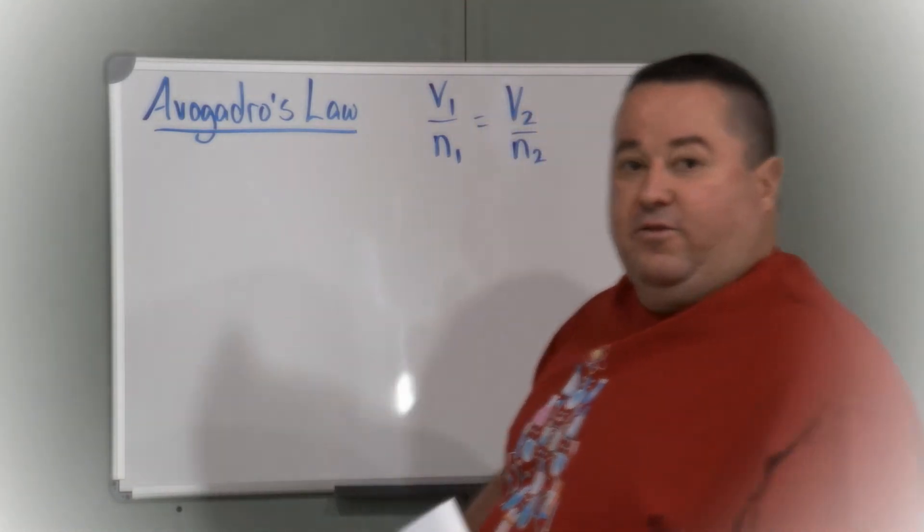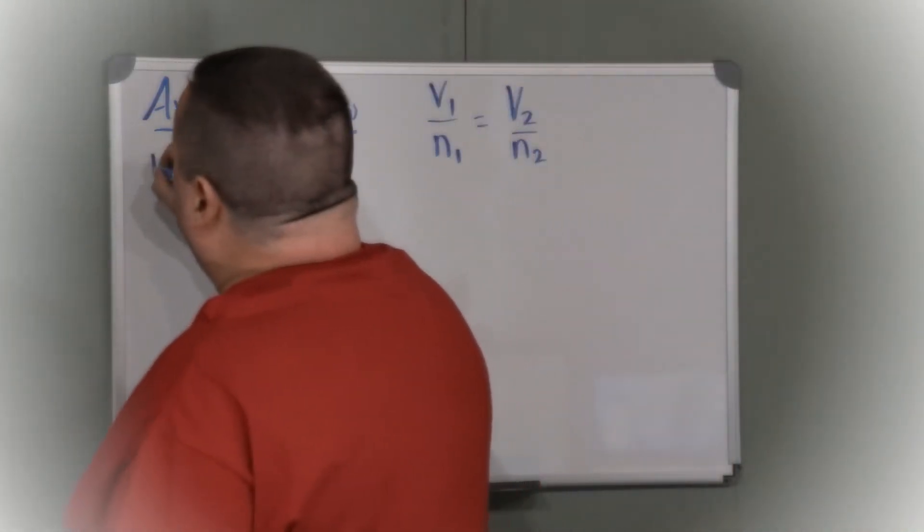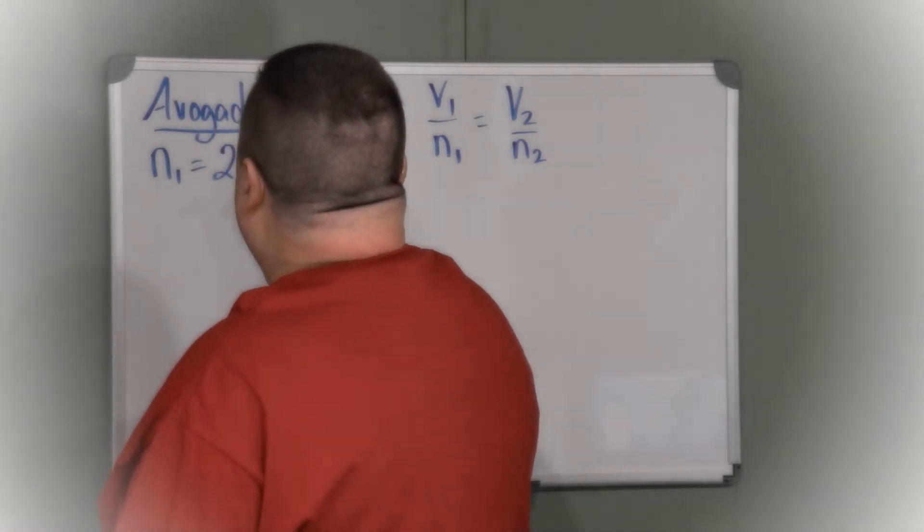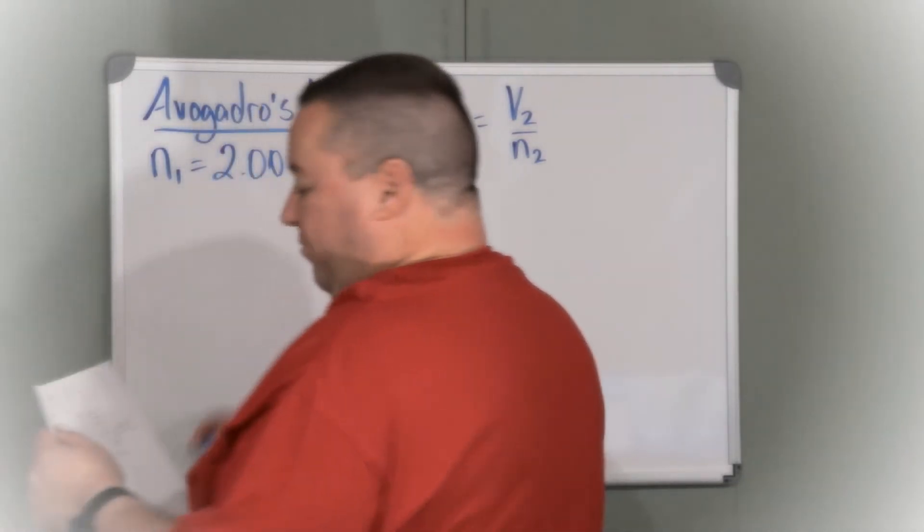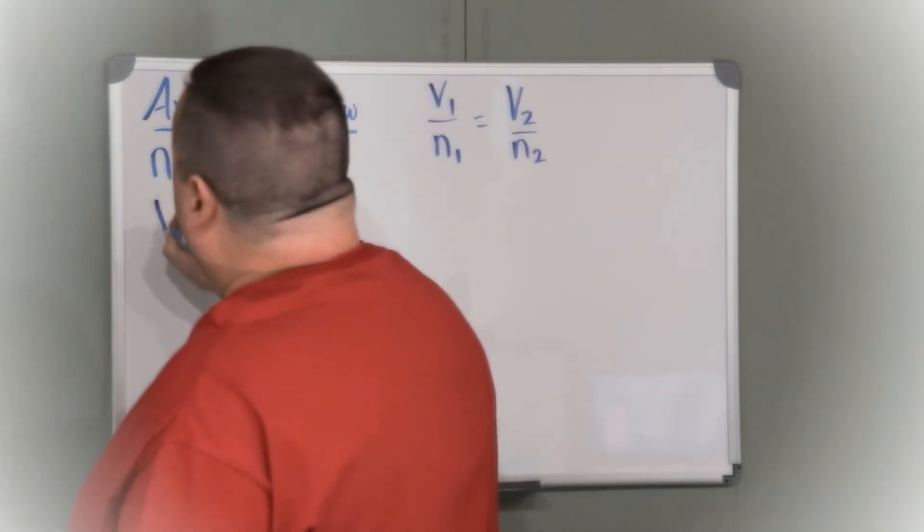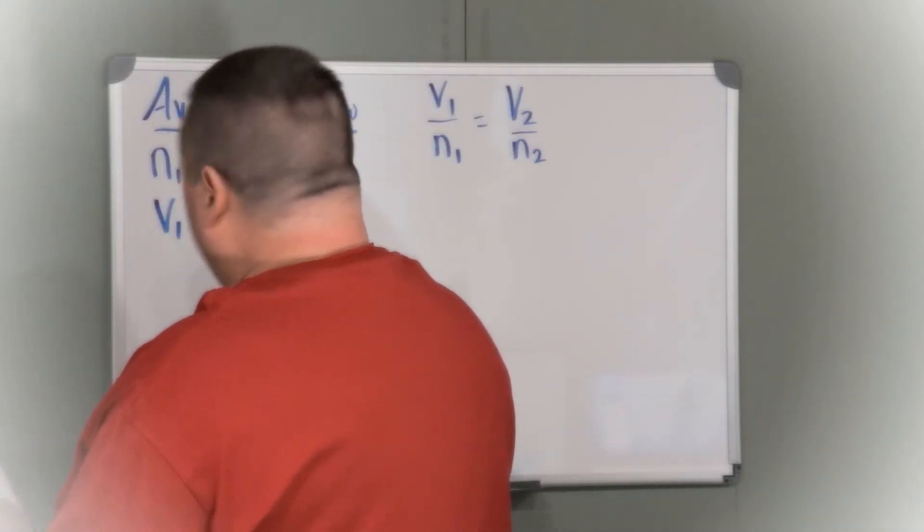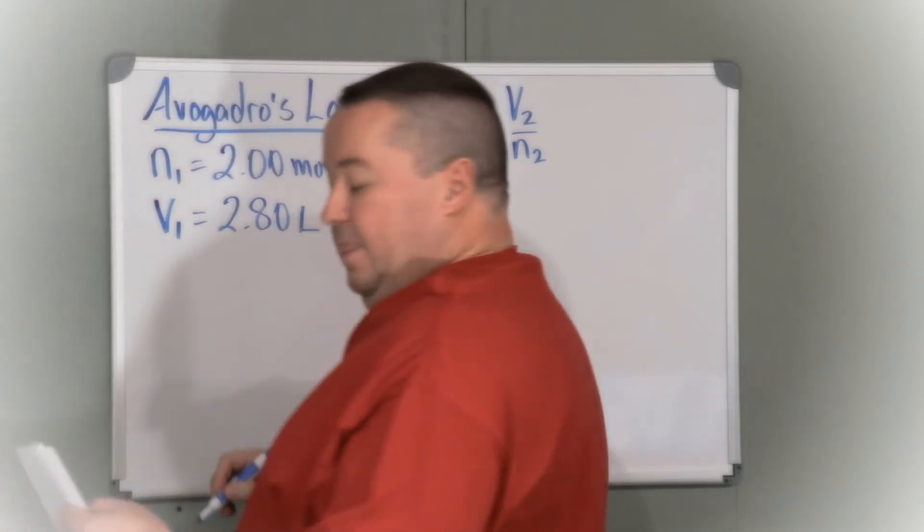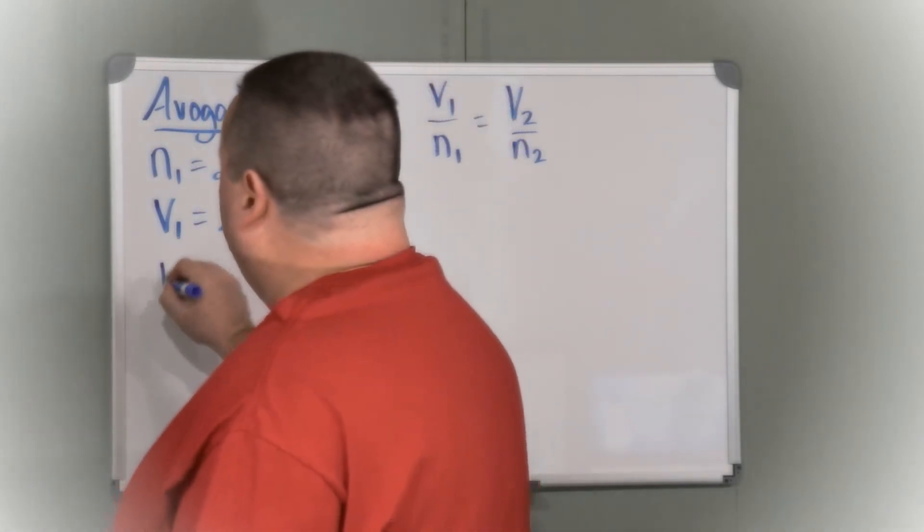We'll make a list of what we're given. We're given that the original number of moles was 2.00 moles. The original volume V1 is 2.80 liters. We know that the new number of moles n2...